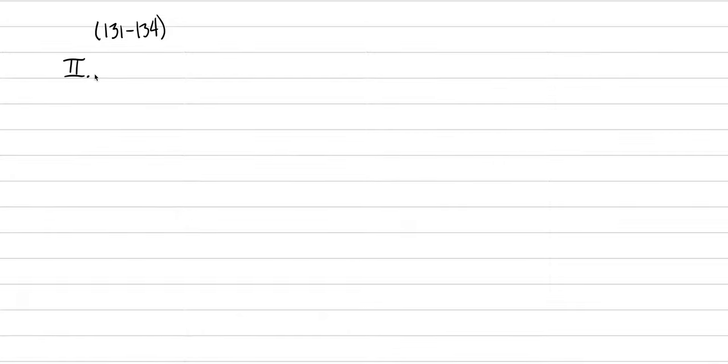This is the 11th lecture of mineralogy. We're still in the textbook on pages 131 to 134, going through the notation on how to describe faces to one another. This lecture won't have many notes but it'll have a lot of examples because we're going to go through Miller indices. We're going to build on what we did last time and use the face intercepts to talk about Miller indices.